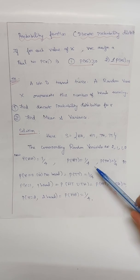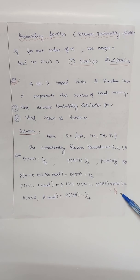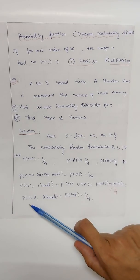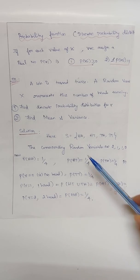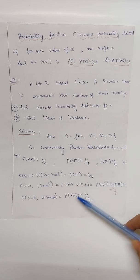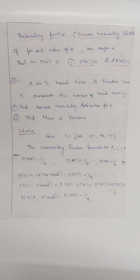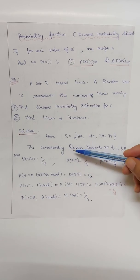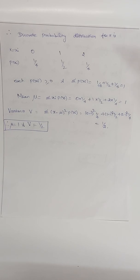So P(X=2) means two heads — only one option exists, HH — giving probability 1/4. This is how we assign probabilities to each value of the random variable X.